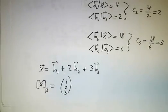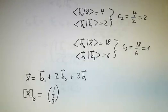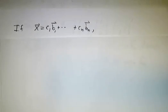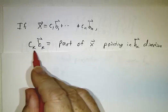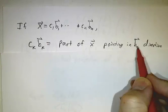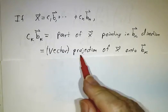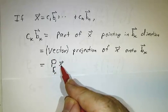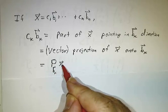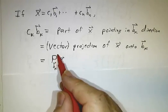So without any row reduction or matrix inversion, just by using inner products, we got the decomposition of x in the b basis. In general, the term ck·bk is the amount of x that's pointing in the bk direction. We call that the projection of x onto bk — or sometimes the vector projection, since the word scalar projection is used for something else. We'll denote it p_bk(x), where p_bk is an operator that takes a vector and spits out the part pointing in the bk direction.